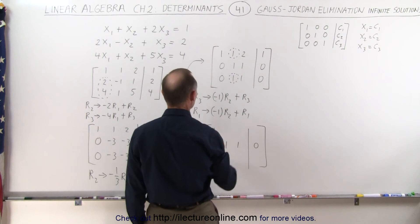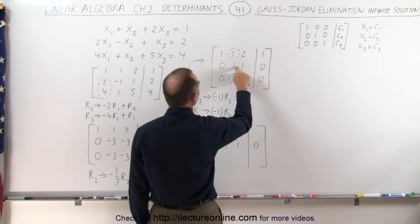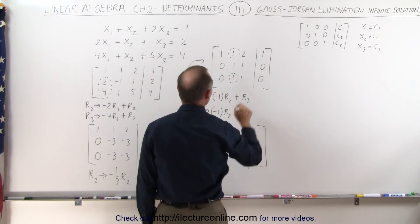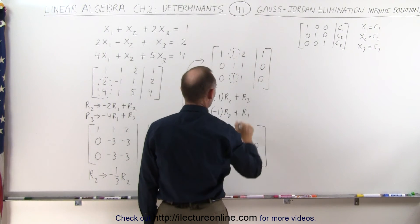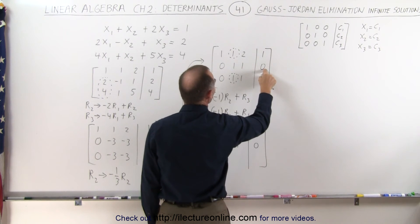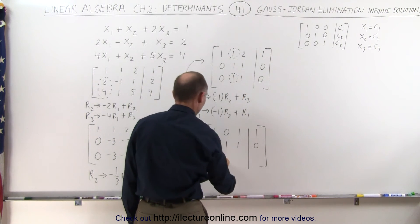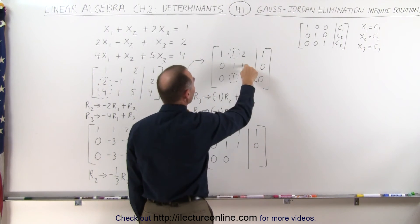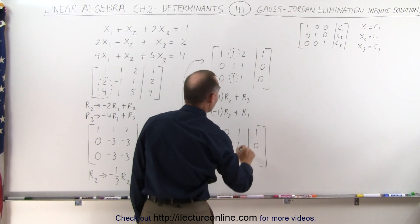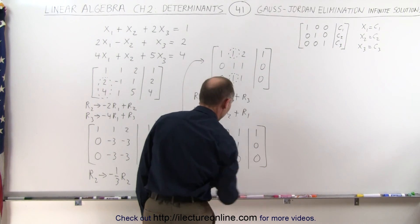The first row, we had a 1 there. Negative 1 plus 1 is 0. Negative 1 times 2 is 1. Negative 1 times this plus that gives you still a 1. Now, the third row, negative 1 times this gives us a 0. Negative 1 times this gives us a 0. And negative 1 times this gives us a 0.